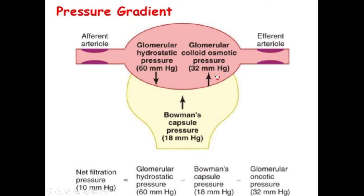Moving into the Bowman's capsule, there is only one pressure — only one arrow. There is no oncotic pressure here because albumin is not allowed to move from the capillary into the capsule. So oncotic pressure is zero in the Bowman's capsule.